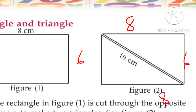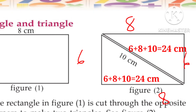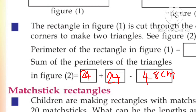We will put the length of the sides: 6 plus 8 plus 10 is equal to 24 cm — that is the perimeter of 1 triangle. 24 plus 24 equals 48 cm for the perimeter of both triangles.